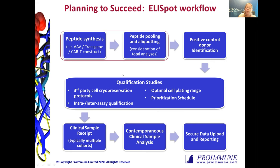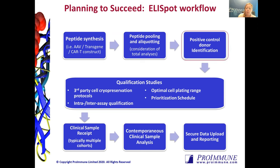We have experience providing large peptide libraries from a number of different antigen sources, whether virally derived or cancer antigens, also viral vectors like AAV, the transgene, or even the CAR-T construct. We'll carefully plan the amount of peptide required to run the full scope of the study and determine an aliquoting strategy appropriate for the frequency of the batches being tested. Once peptides are synthesized, we can provide additional optimization studies, and in some instances it may also be possible to identify a positive control donor for use in qualification studies alongside your clinical samples. This can be done for gene therapy studies, for example, where a viral vector is used, because a portion of the healthy population may have a response against that virus.